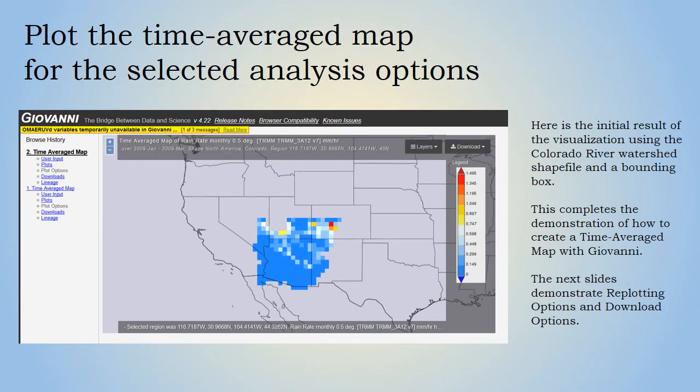Here is the initial time average map visualization for the three-month period January to March 2009, using the Colorado River watershed shapefile and a bounding box. This completes the demonstration of how to create a time average map with Giovanni. The next slides will demonstrate replotting options and download options.